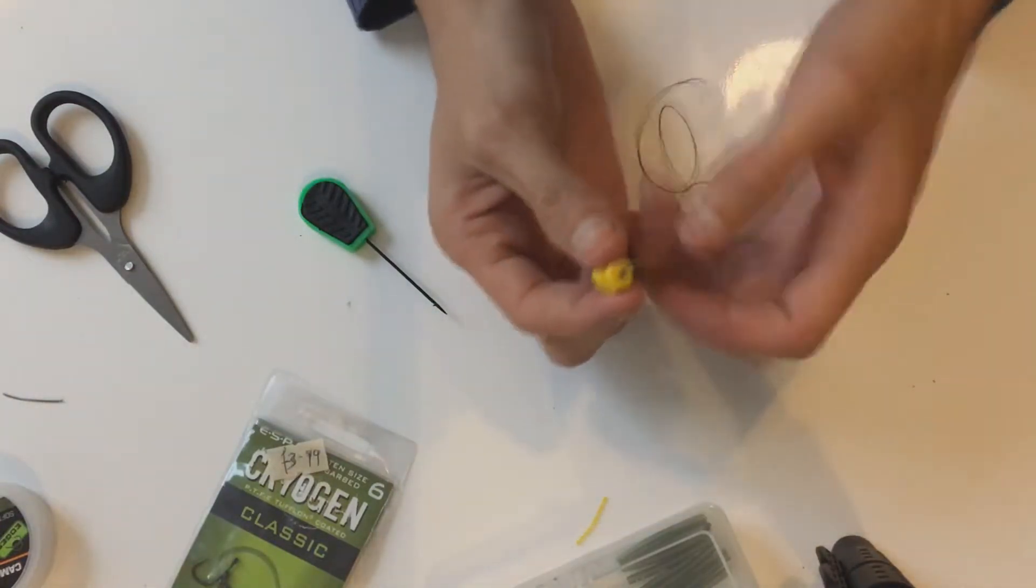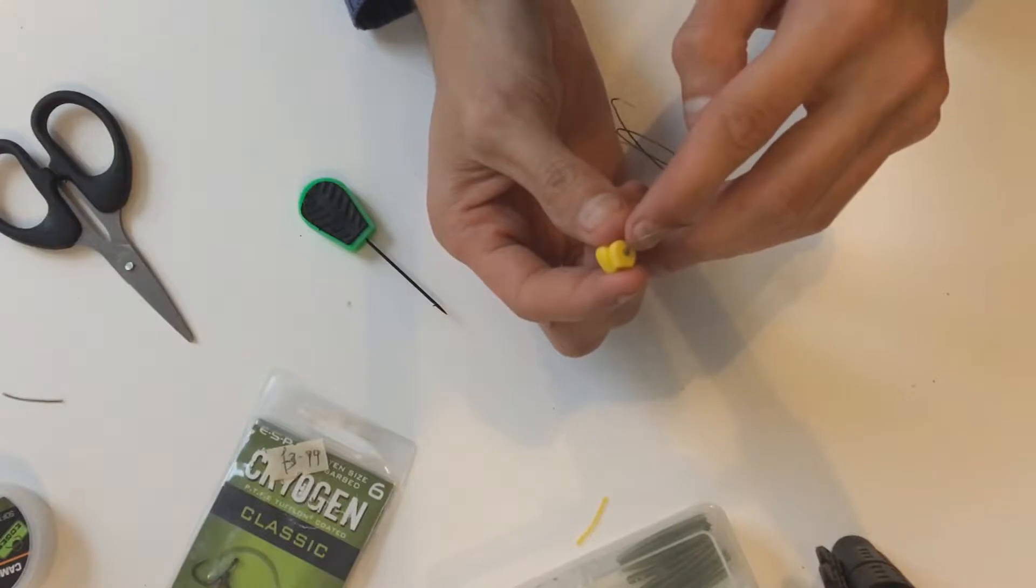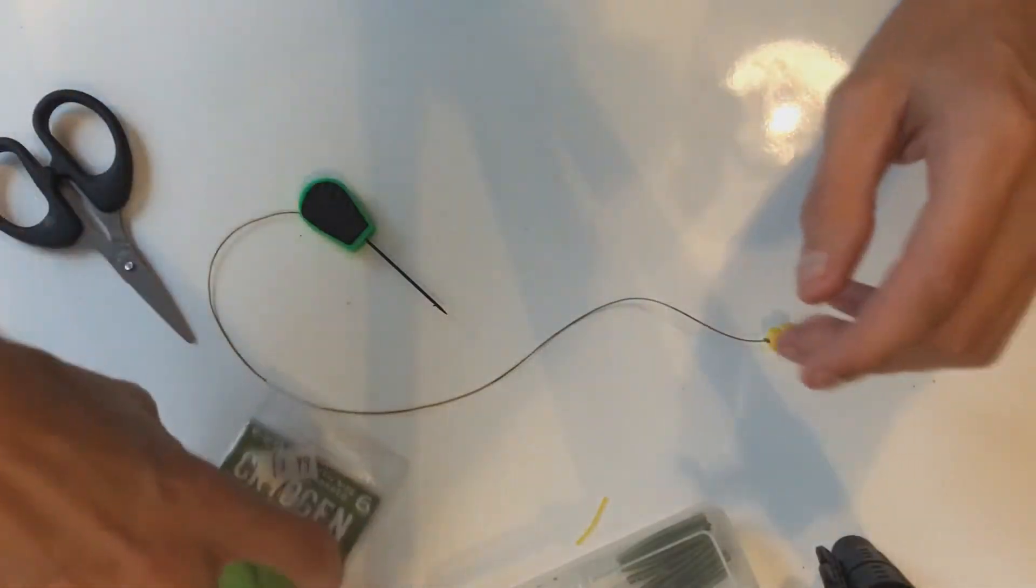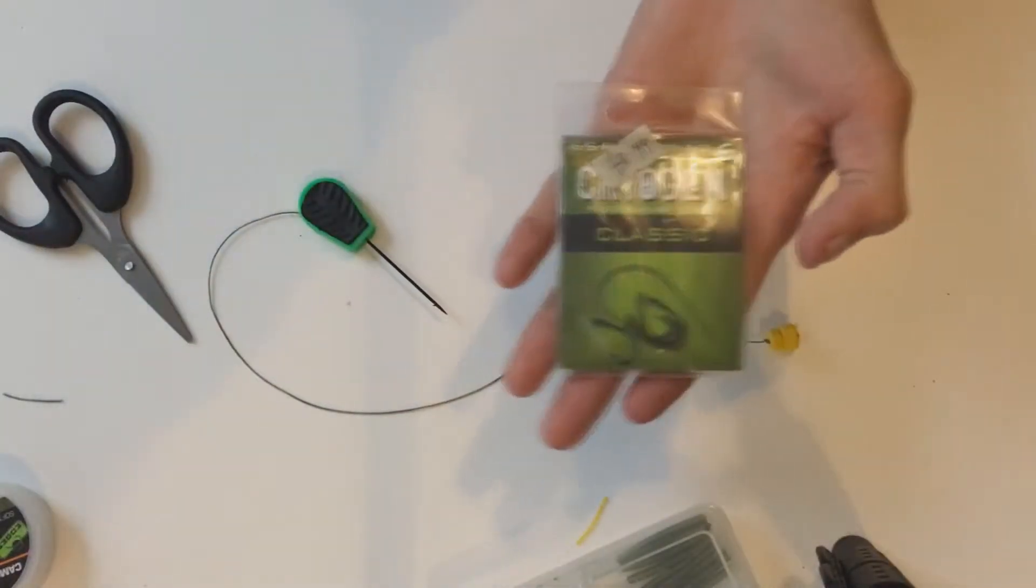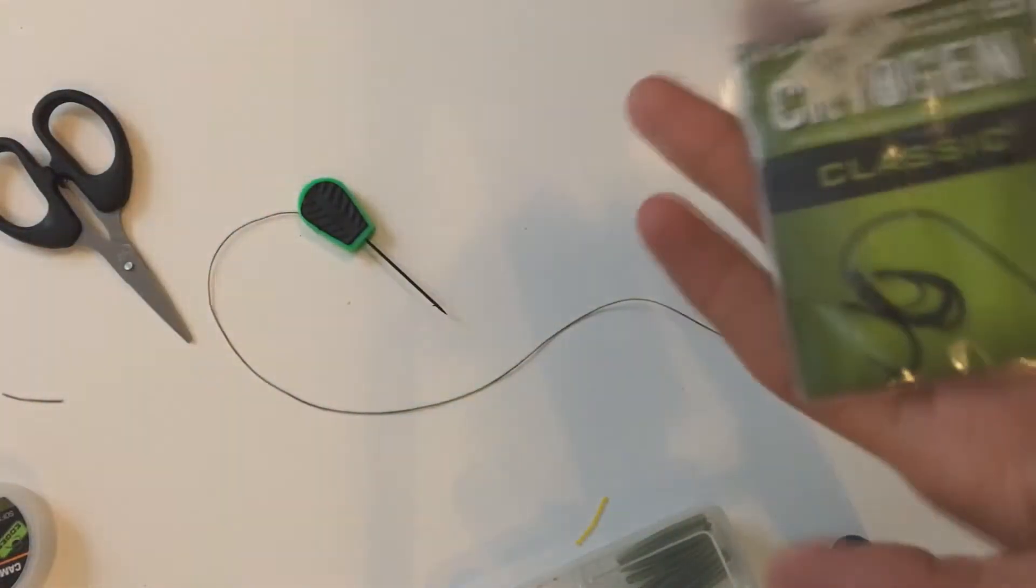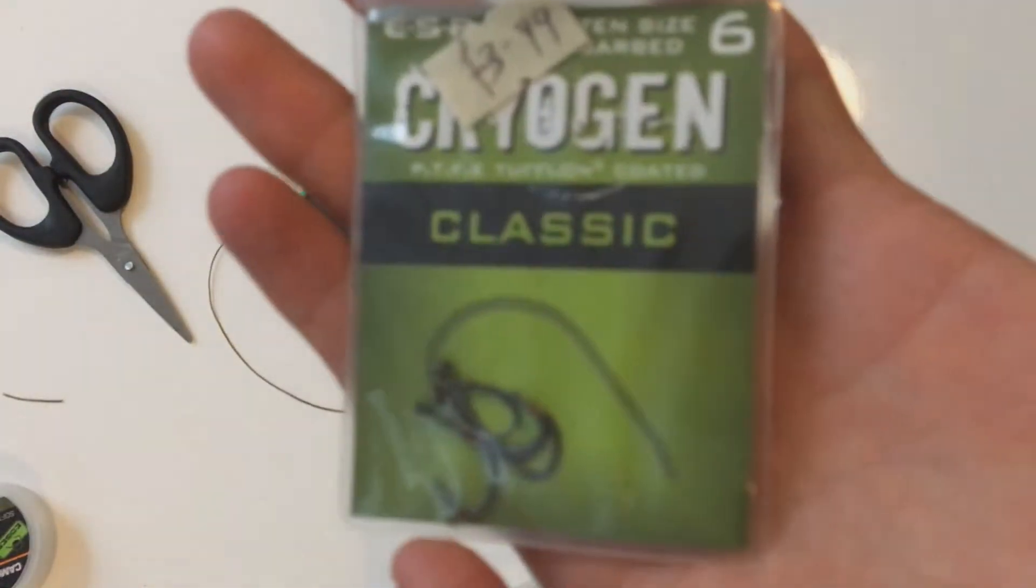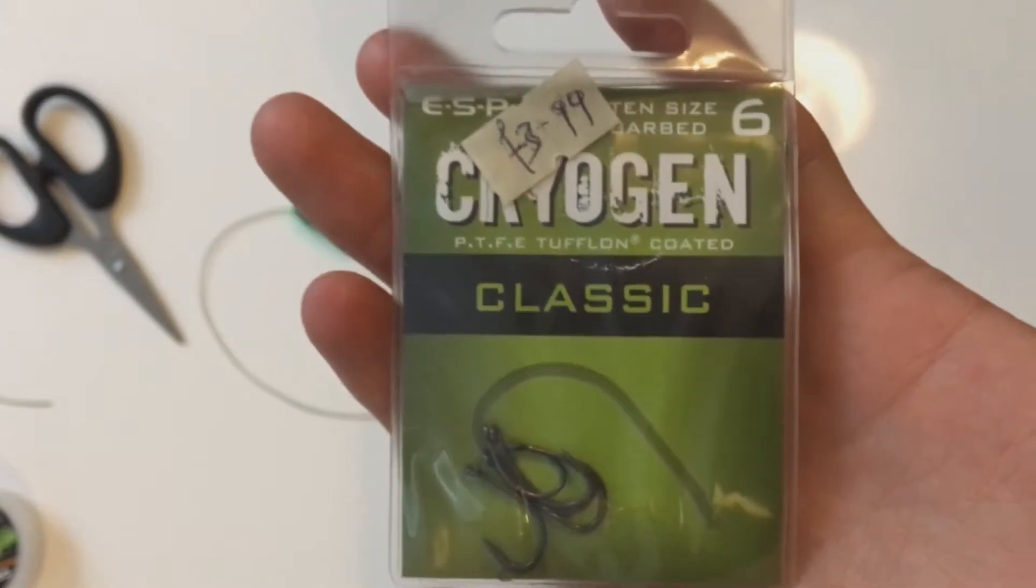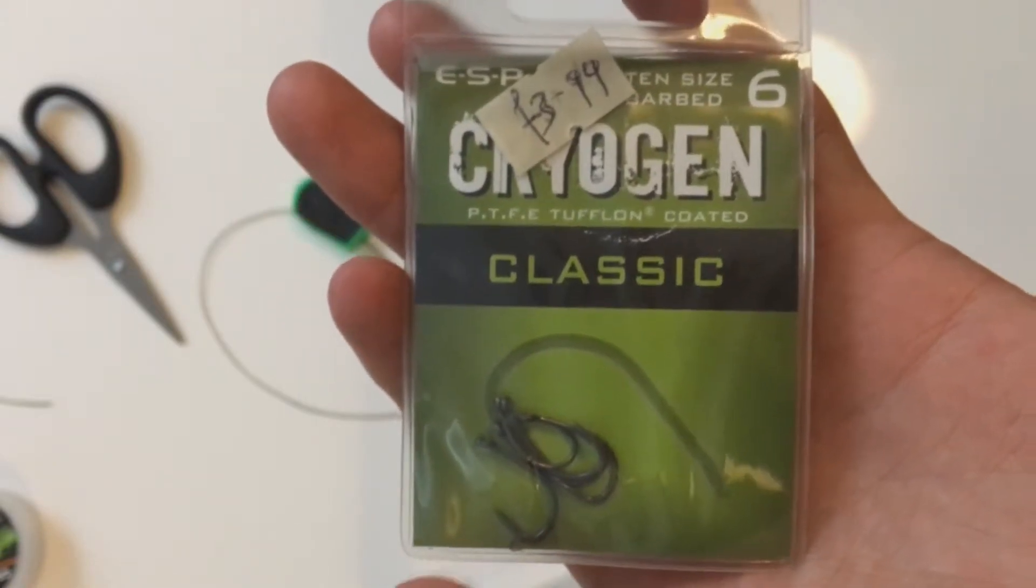So as you can see the knot is just about in the bottom piece which is perfect, that's exactly how I wanted it. So next we're going to grab our chosen hook. Now these are mine for today. I'll try to bring it a bit closer so you can see, get in focus.